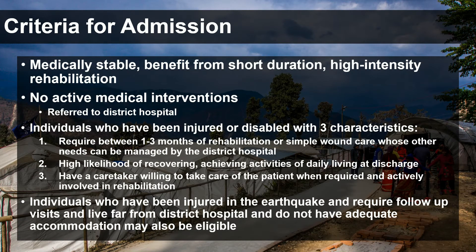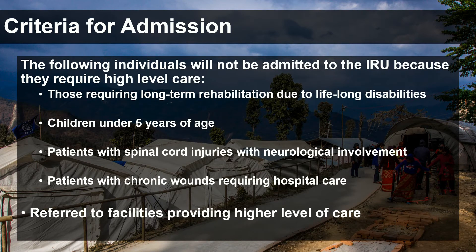People not admitted included those requiring long-term rehab or with lifelong disabilities, children under five years of age, patients with spinal cord injuries with neurological involvement, and patients with chronic wounds — due to the capacity at the center. When patients were admitted, they went through an assessment with a physiotherapist, nurse, psychosocial worker, social worker, paramedic, and the physician from the district hospital. They were placed into one of three categories based on time: Category A required less than four weeks of rehab; Category B, four to eight weeks; Category C, eight to sixteen or more weeks.